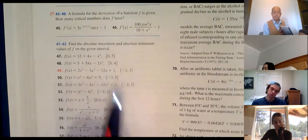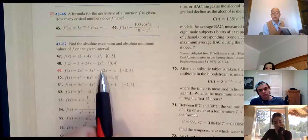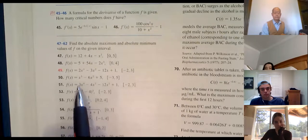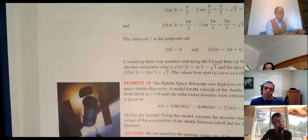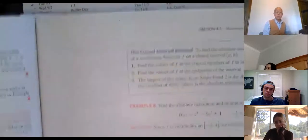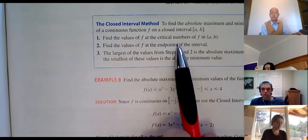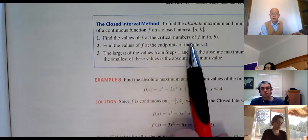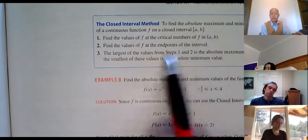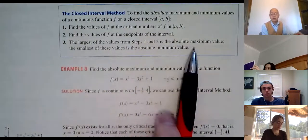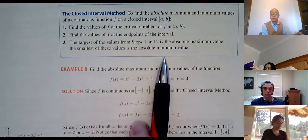They give you a closed interval, and you find the absolute max and absolute min. You have to check the endpoints — you're definitely going to plug in the endpoints — and also check the critical numbers. Going from a to b: find the critical numbers by setting the derivative equal to zero, and also where the derivative is undefined but still within the domain. Then find the function values at the critical numbers and all the endpoints. From that list, the highest y-value is the absolute maximum and the lowest is the absolute minimum.